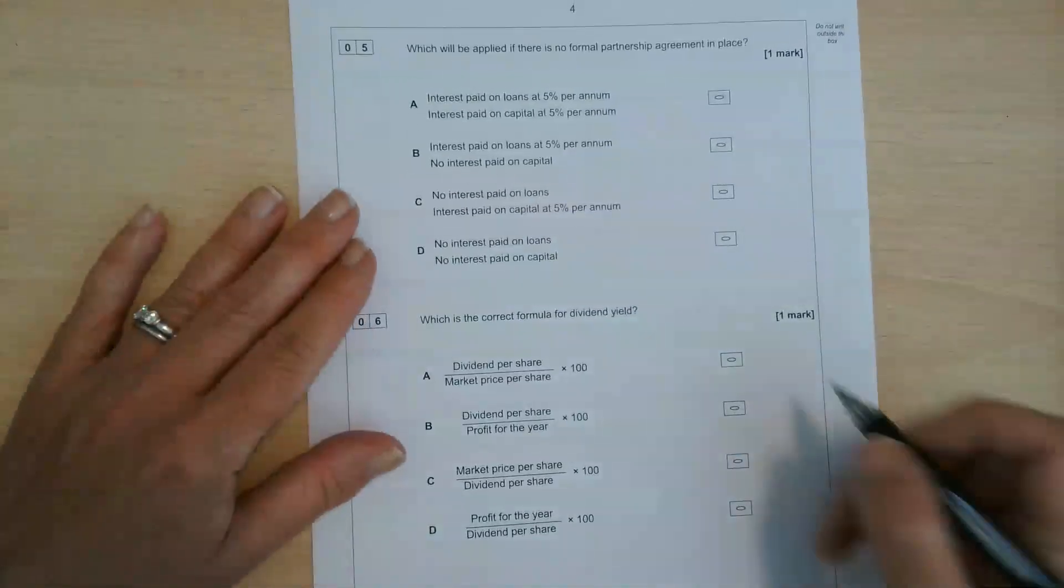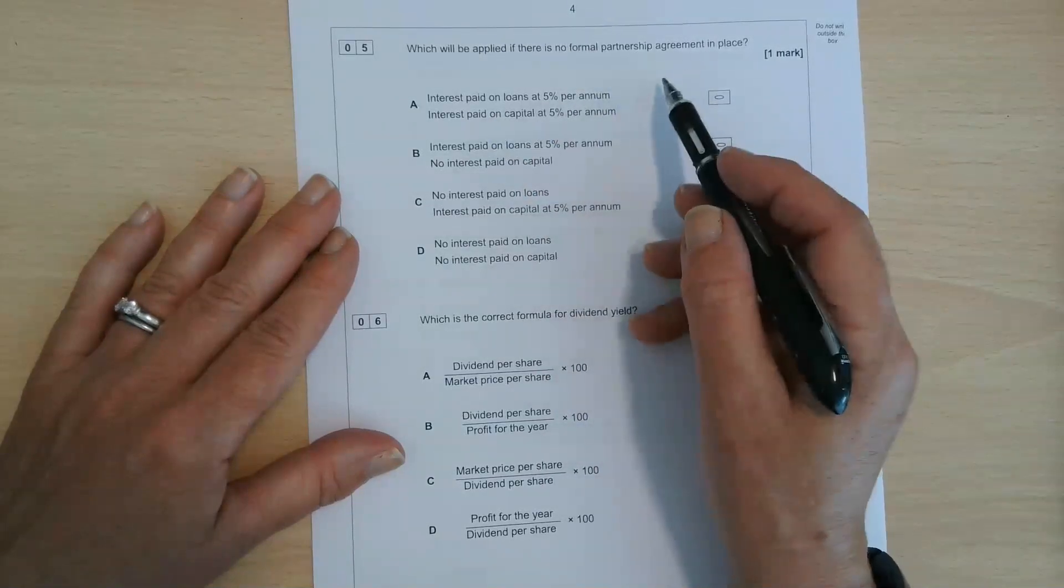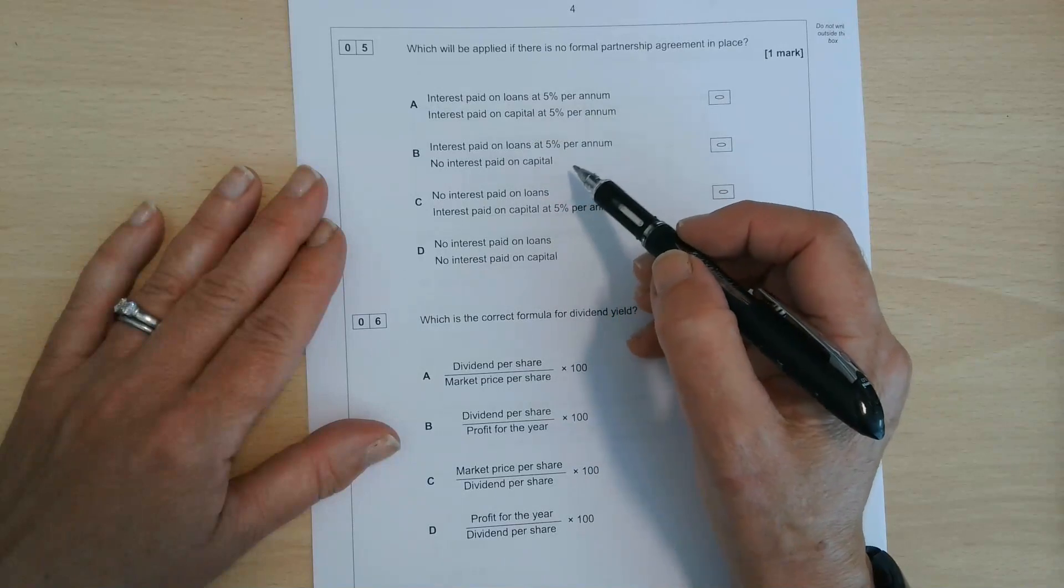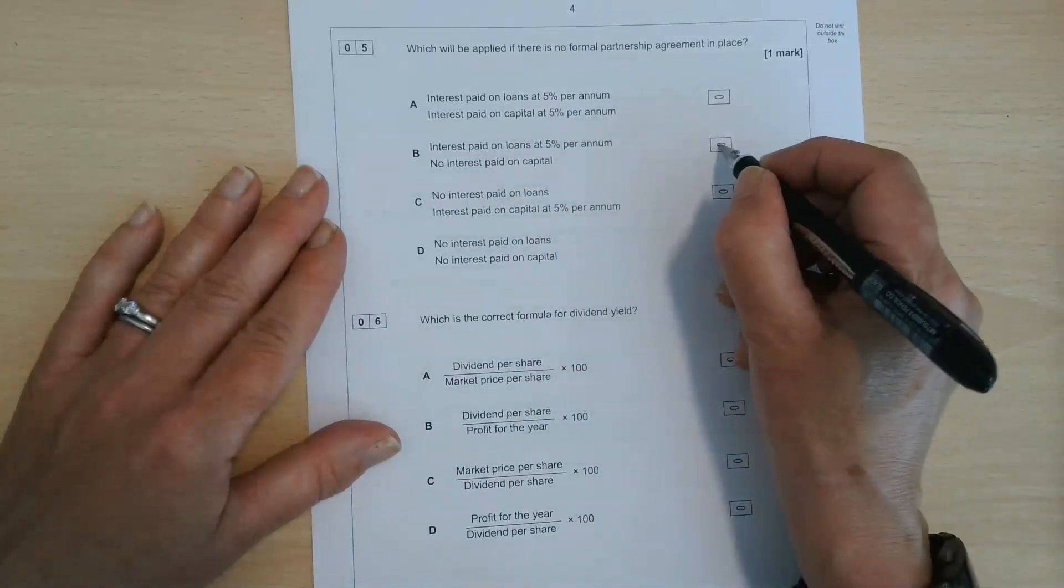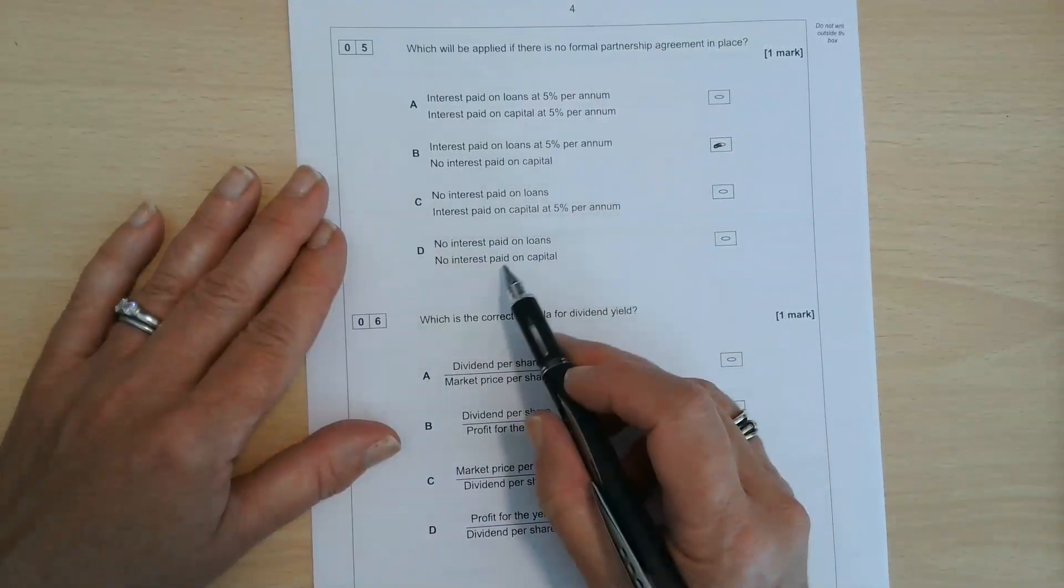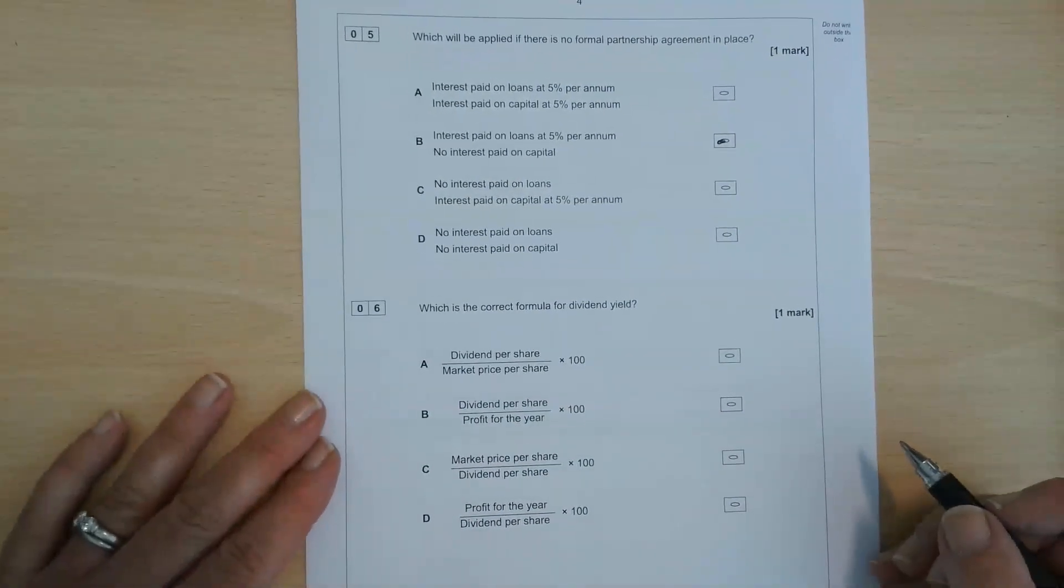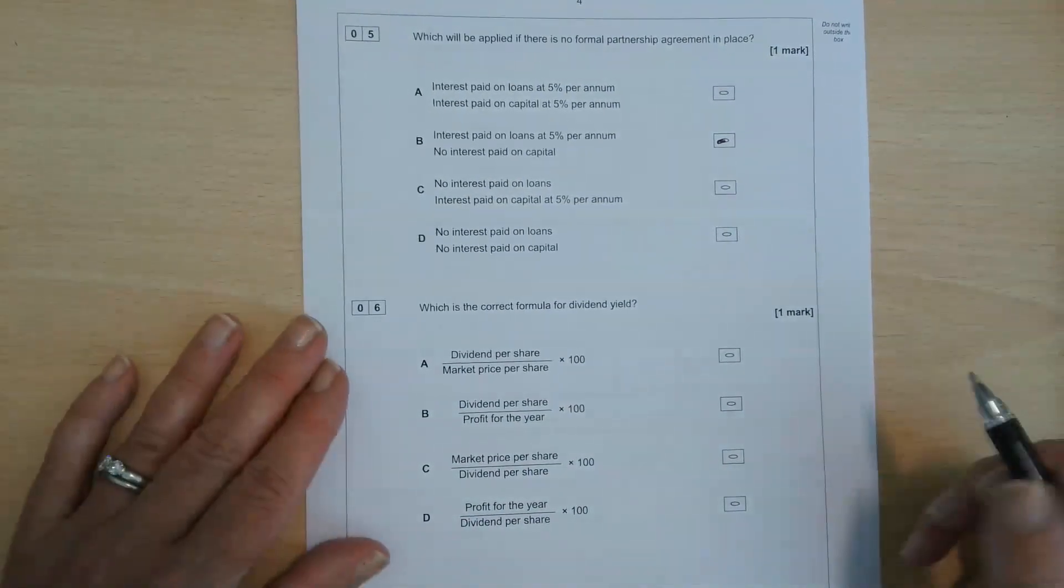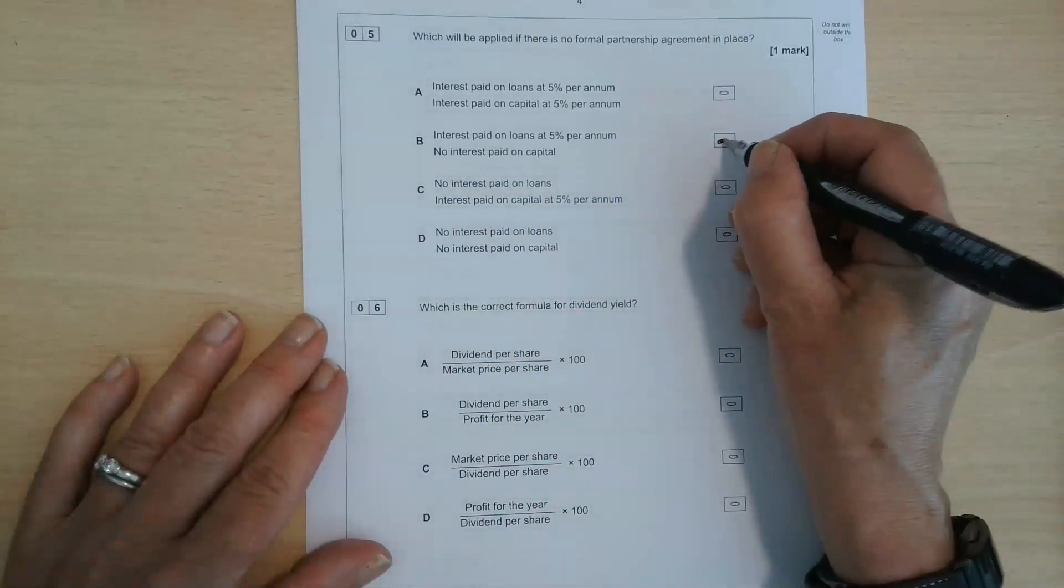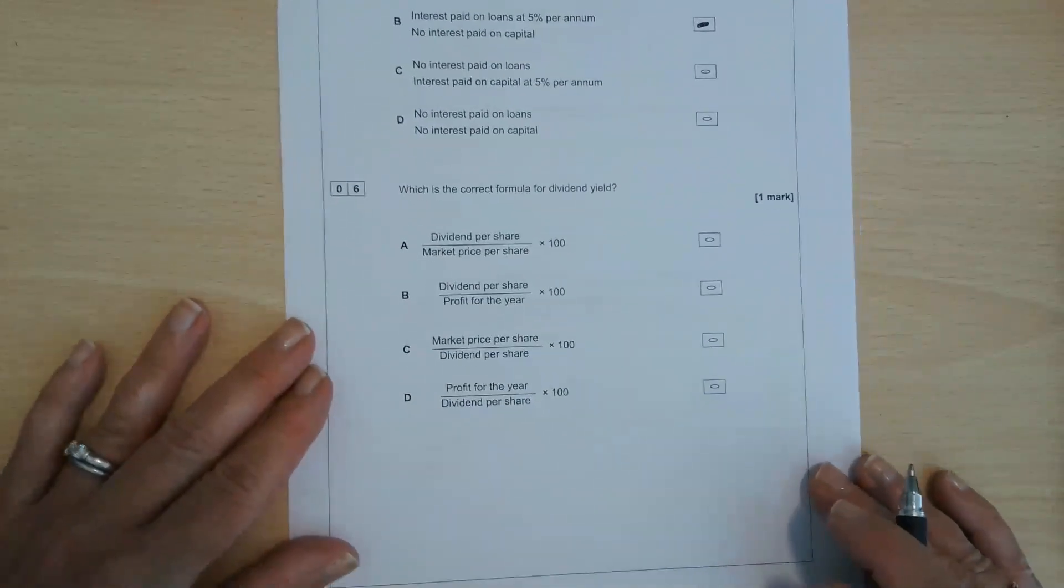Number five then, which will be applied if there is no formal partnership agreement in place? Remember, no interest on capital, no interest on drawings. You can just pay interest on loans at 5% per annum. So I think it's going to be B for number five. Let's just check these out, though. No, that's not right. We don't pay interest on capital. So it's definitely B for that one. So remember, there's no partnership agreement. Nobody gets interest on capital. No interest is charged on drawings. But if a partner loans the partnership money, then we can give them 5% interest, deducted as an expense in the income statement.